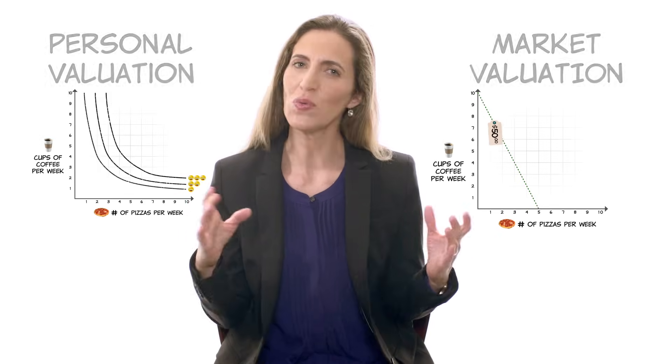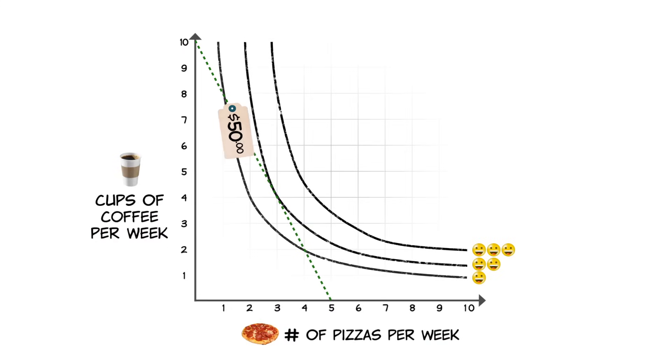And that means finding that optimal combination of goods that brings together how the market values goods and our preferences. That's what this graph, illustrating your indifference curves and budget constraints, lets us better understand. When you make a decision, you are effectively trying to be the happiest that you can given the constraints that you face — solving a constrained optimization problem where you choose the combination of goods that maximizes your utility given the prices of goods and your income.